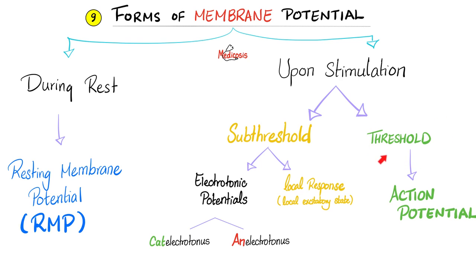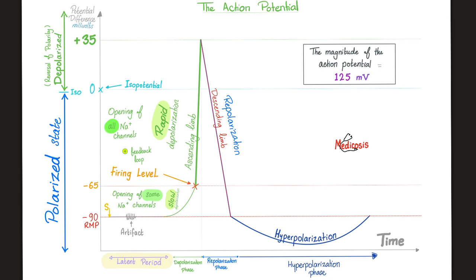If you give me a robust threshold stimulus, I'll give you an action potential. But if you give me less than threshold, I'll give you less — and that's the local response. If you push me up to the threshold, I give you a robust action potential. But if you give me half a threshold, I will not give you an action potential at all. It's called the all or none law.